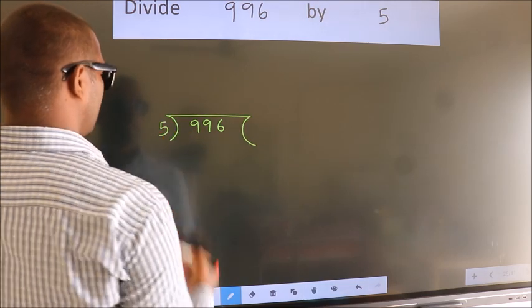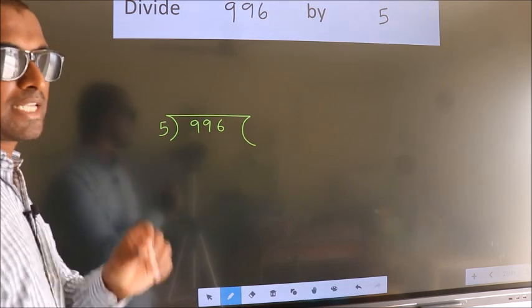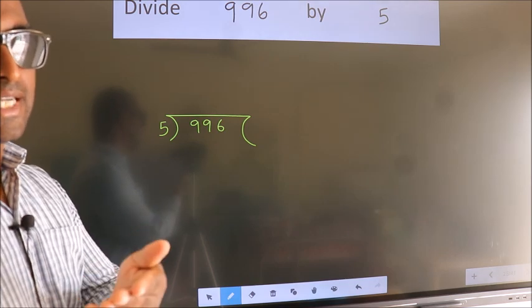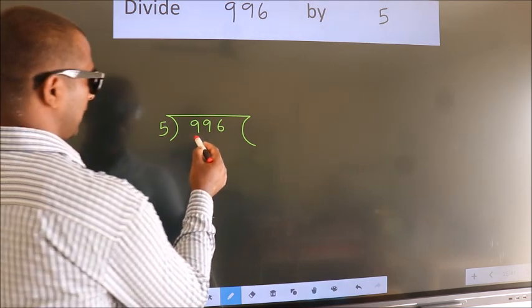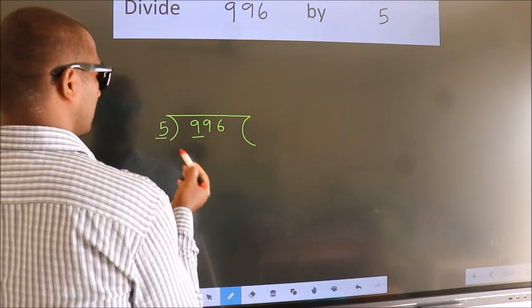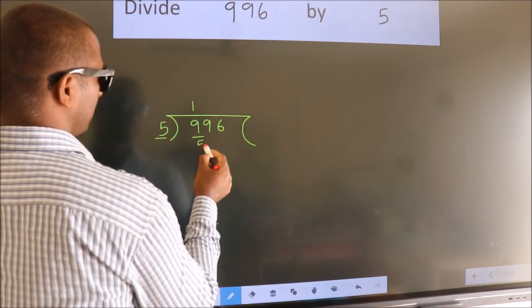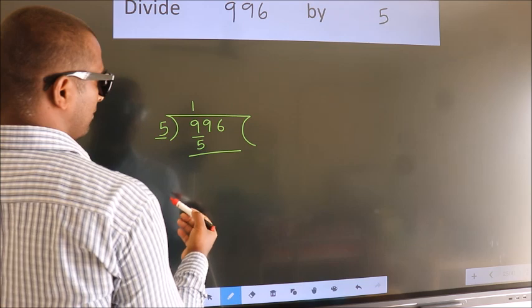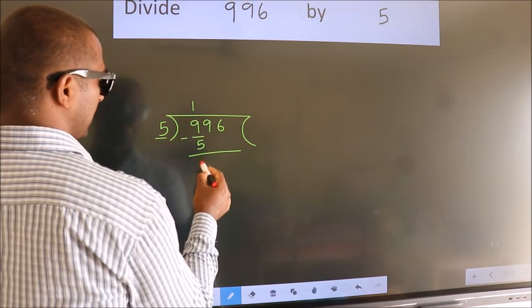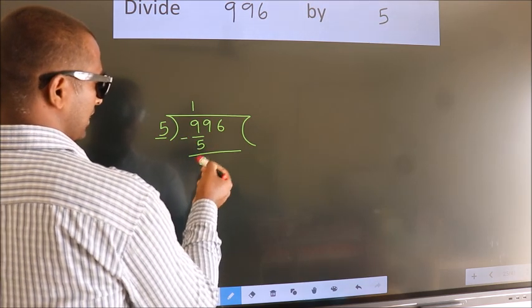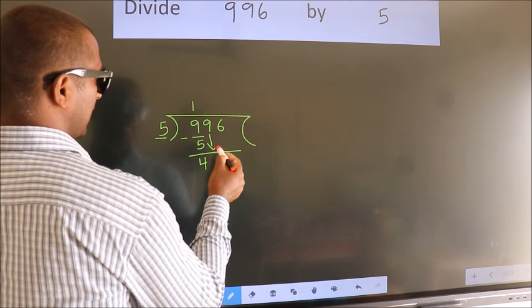5 here. This is your step one. Next, we have 9 here. A number close to 9 in the 5 table is 5 times 1, which is 5. Now we subtract and get 4. After this, bring down the beside number.